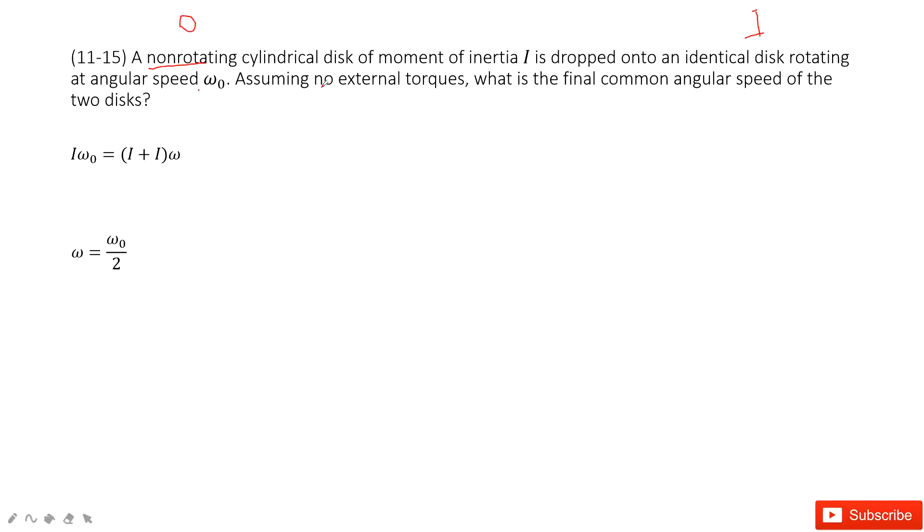And it tells us no external torque. No external torque means the angular momentum is conserved. We need to find the final angular speed.